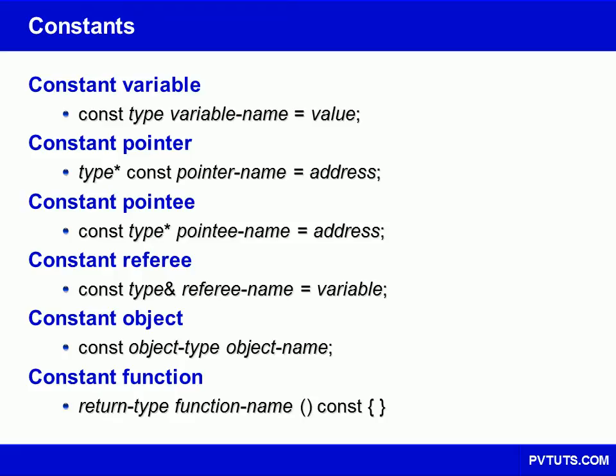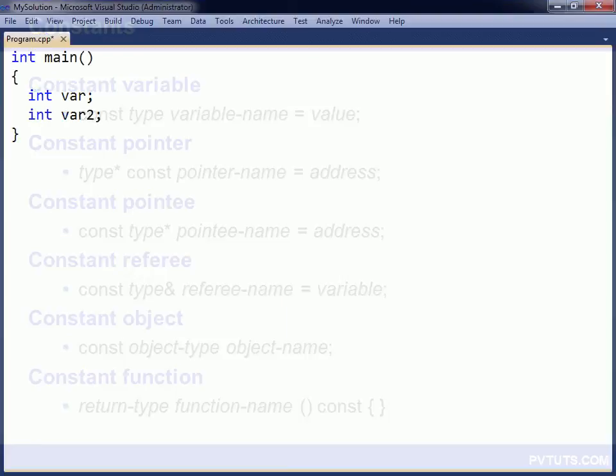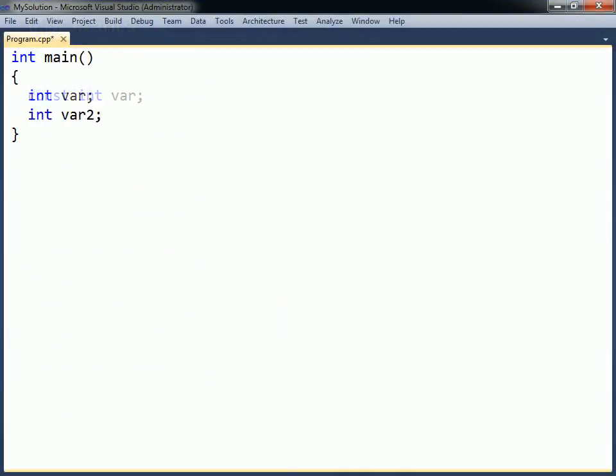A constant is a variable whose value cannot be changed once assigned. A variable can be made into a constant by adding the const keyword, either before or after the data type. This modifier means that the variable becomes read-only and must therefore be assigned a value at the same time as it is declared.